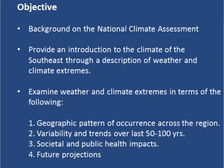What I want to do here is give a very brief background on the National Climate Assessment, and then provide an introduction to the climate of the Southeast through a description of weather and climate extremes. In particular, we're going to look at the geographic pattern of occurrence of these extremes across the region, focusing on the variability and trends over the last 50 to 100 years. I'll mention societal and public health impacts, and then spend the last quarter of the presentation on future projections.